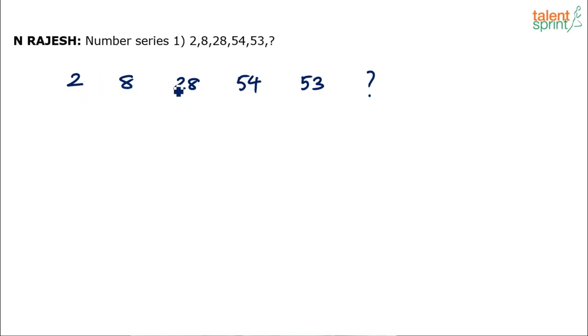If you see, the numbers are increasing: 2 becomes 8, becomes 28, 28 becomes 54, 54 becomes 53. So up to 54 they were increasing, but then there is a drop. They are starkly increasing and then there is a drop after this.